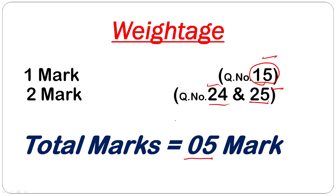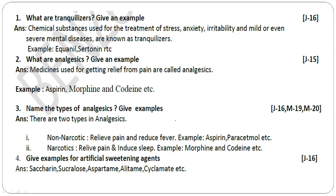What are tranquilizers? Give an example. Tranquilizers are chemical components used for treatment of stress, tension, and anxiety. They are used for mild or even severe mental diseases. These are memory-based questions you can write directly.